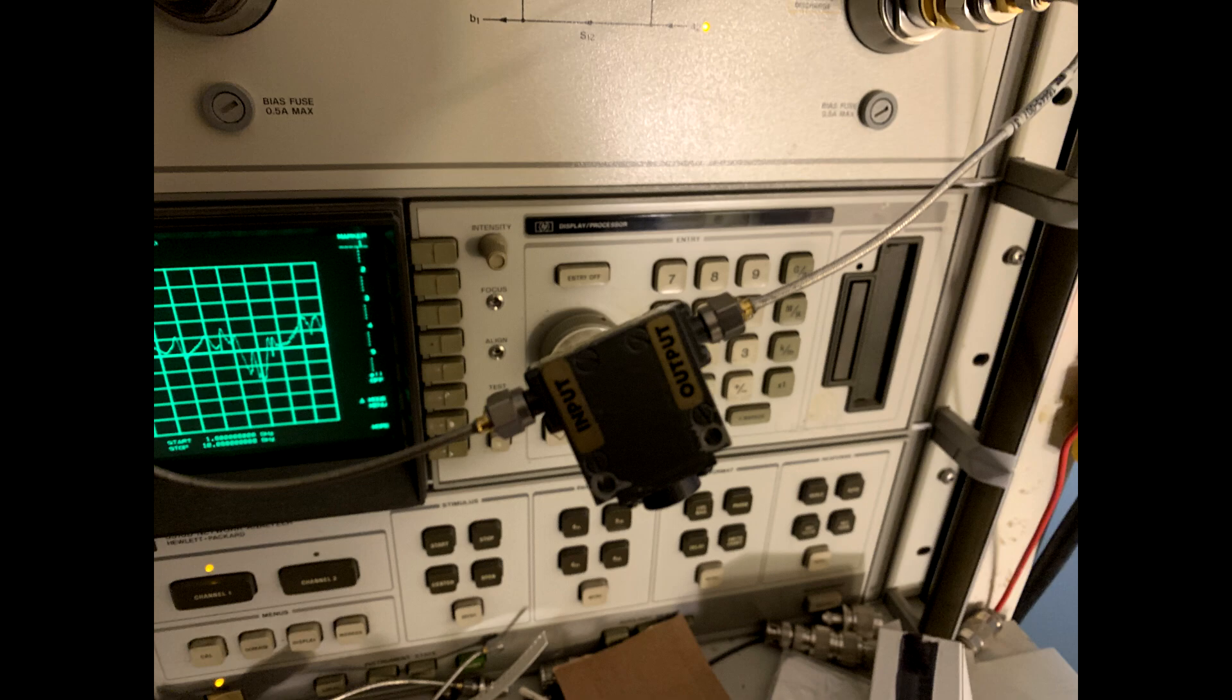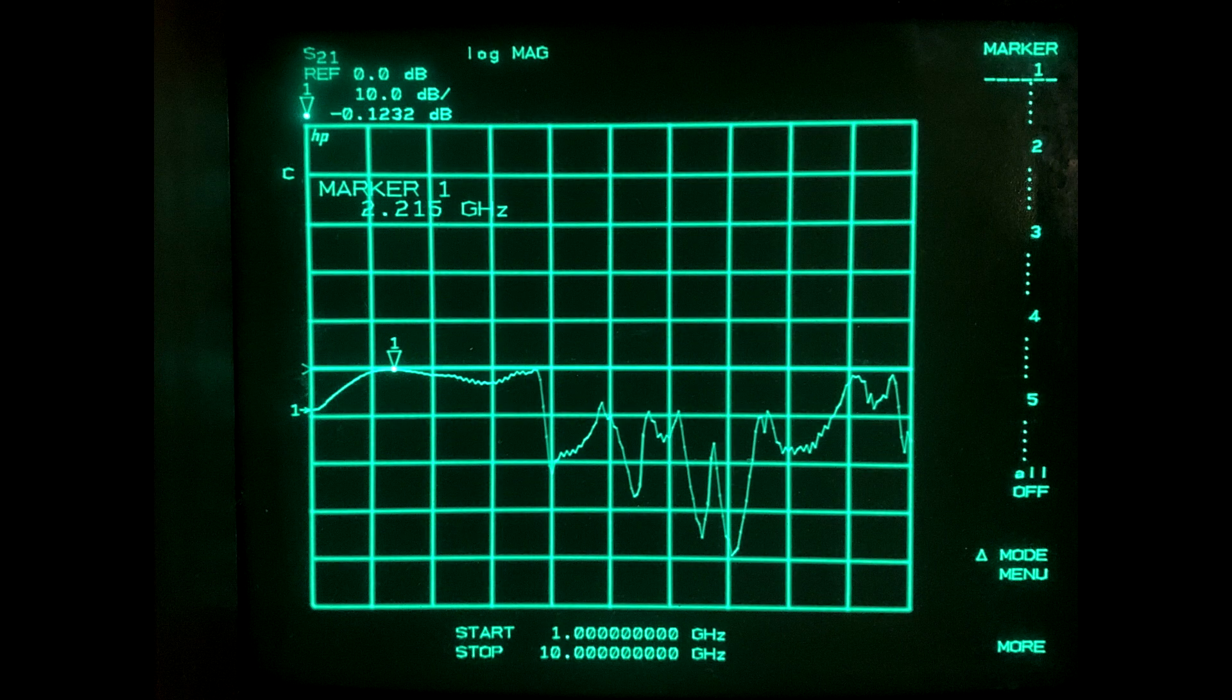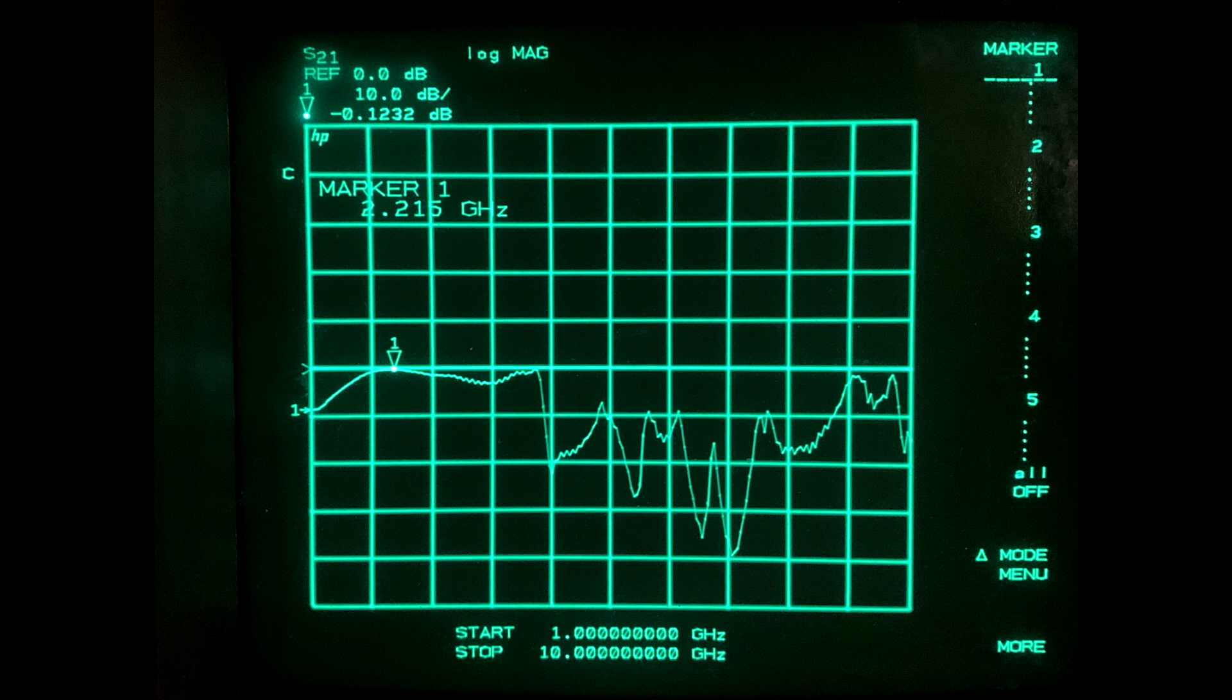The first test we're going to do is S21, the through measurement of the device. You can see it has a passband of about one to five gigahertz - one, two, three, four, five. I had guessed it would probably work somewhere between two and four gigahertz, so it's a little bit broader than that, but looks pretty good.